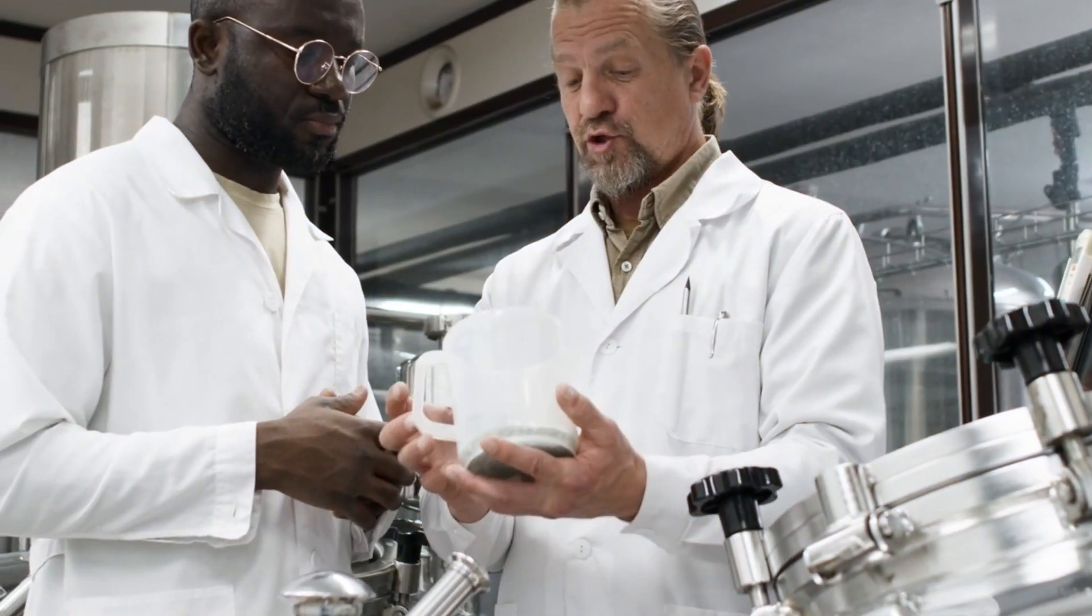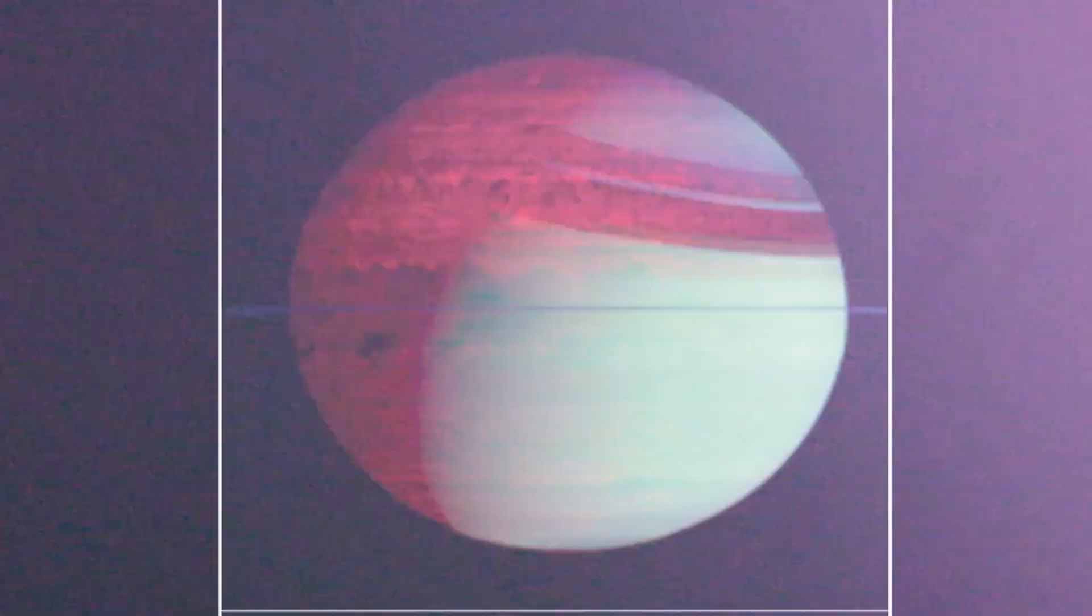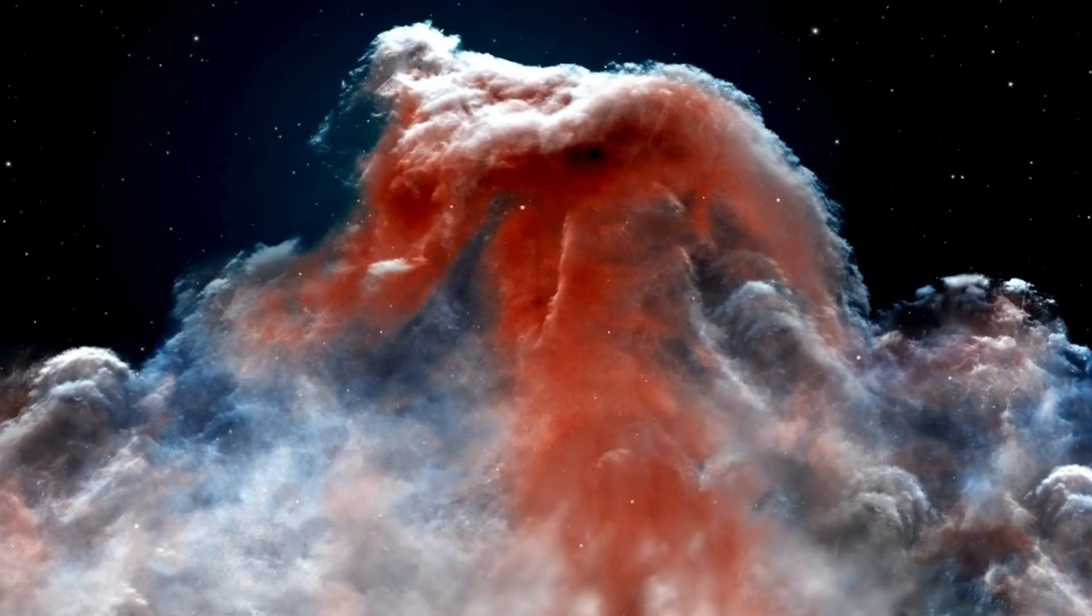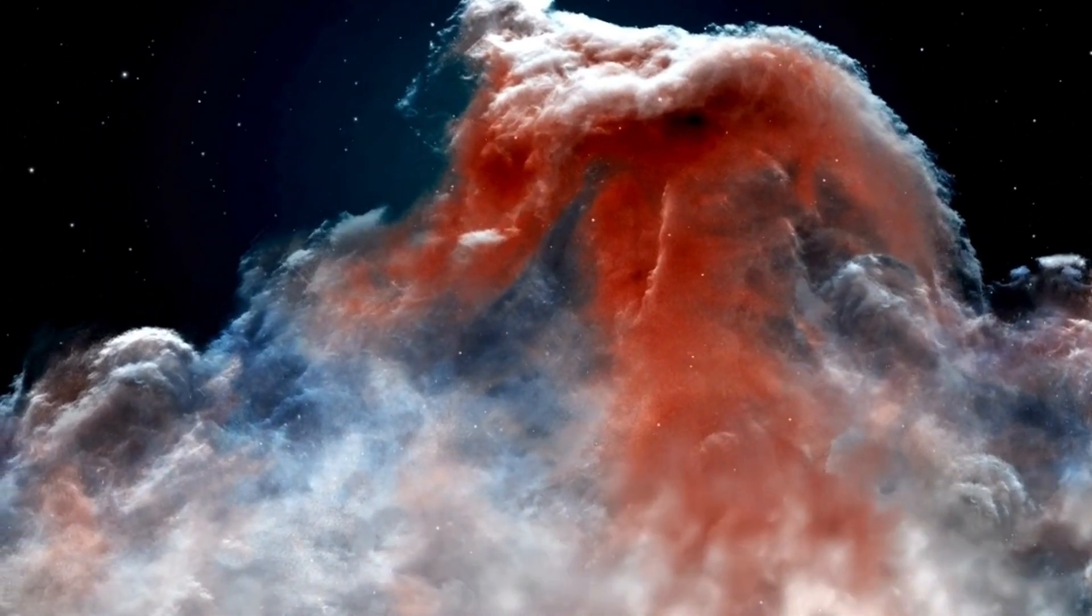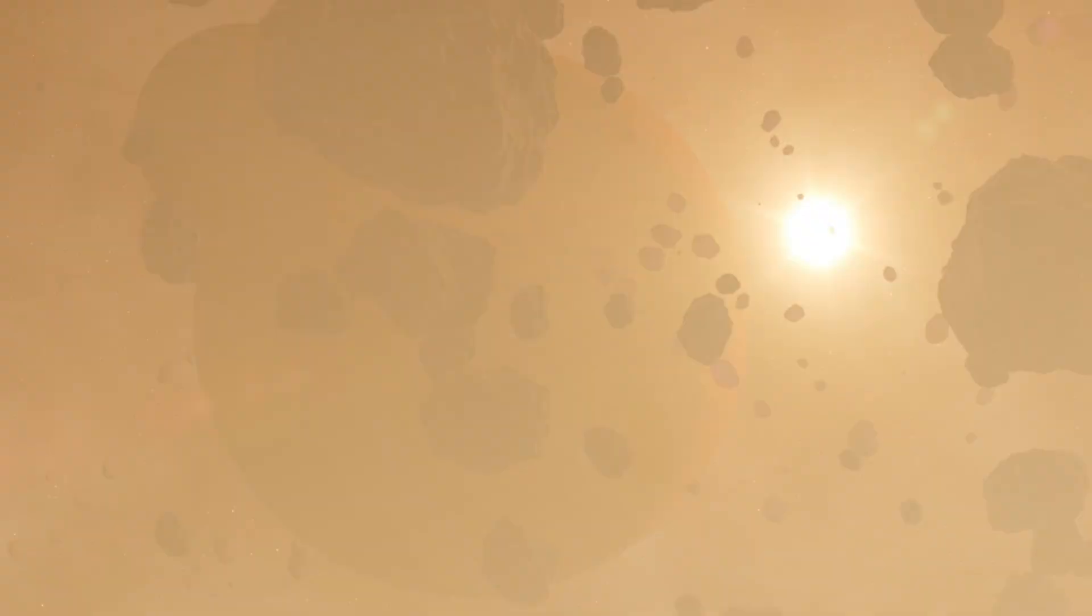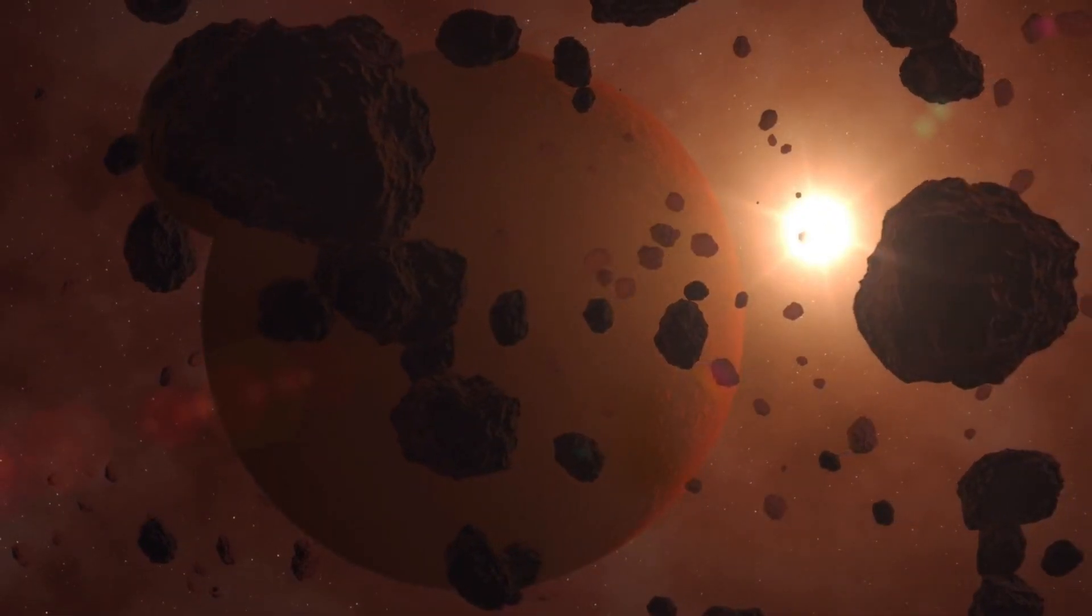Astronomers are considering three leading theories—an unidentified geological structure, an extreme mineral deposit, or a previously unknown phenomenon in exoplanet science. If confirmed to be a geological structure unlike anything in our solar system, it could completely reshape our understanding of how rocky exoplanets develop over time.